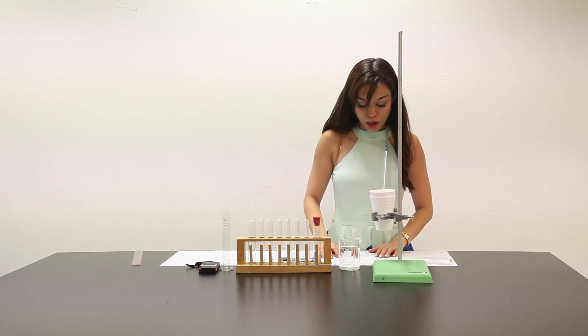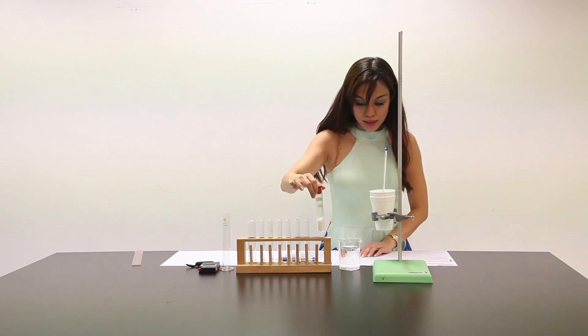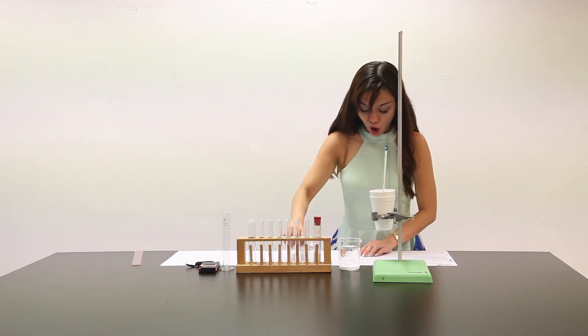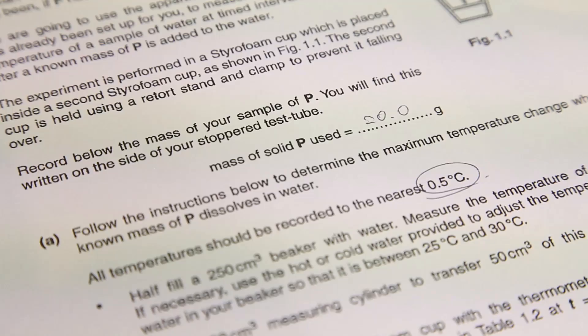Record the mass of your sample of P. You will find this written on the side of your stoppered test tube. Over here it's written 20 grams. So the mass of P used is 20.0 grams.